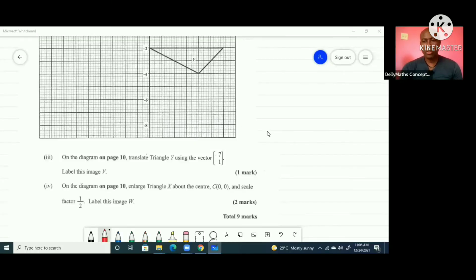The next question says on the diagram on page 10, which is this diagram here, translate triangle Y using the vector negative 7, 1. Remember when we're dealing with translation, firstly we have to move horizontally before we move vertically. When you go to the left, it's a negative movement. If you go to the right, it's a positive movement. If you go up, it's positive. You go down, that's negative.